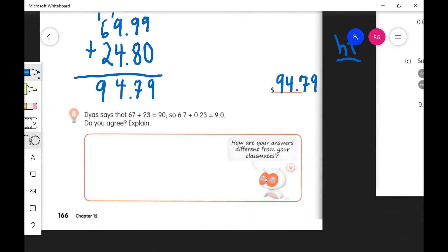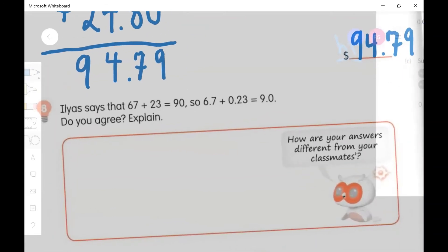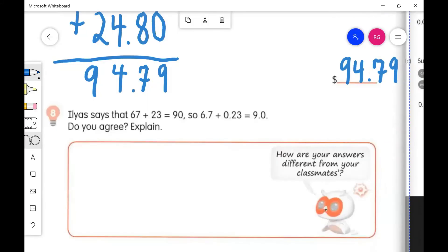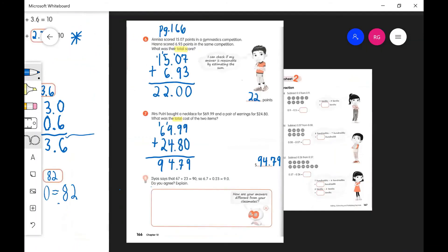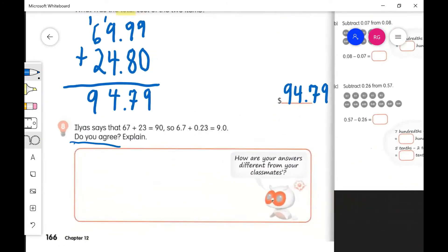This is page 166. It says Elias - I'm not sure how to pronounce his name. 67 plus 23 equals 90, so 6.7 plus 0.23 equals 9.0. Do you agree? Do you agree Meinor, or what do you think? Is this correct? Yes or no? No, no. Why not?